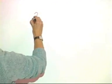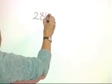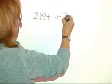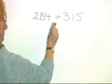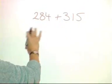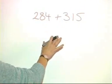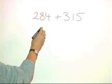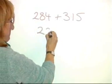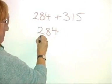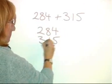This will work with numbers of all sizes. So we can take 284 and add it to 315. We're still partitioning, but we don't need to show how the numbers split up, just as long as it's happening in our heads. So let's write this out with one number underneath the other.